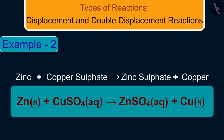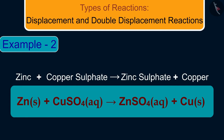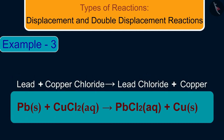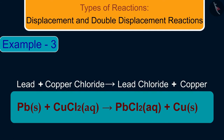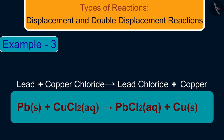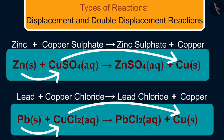Other examples of displacement reactions are: first, zinc reacts with copper sulfate and displaces copper to form zinc sulfate and copper. Another example is the reaction of lead with copper chloride — it displaces copper to form lead chloride and copper. Zinc and lead are more reactive elements than copper and therefore displace copper from its compounds.